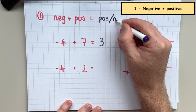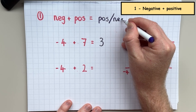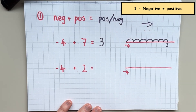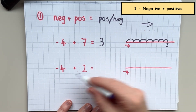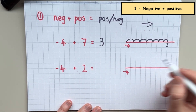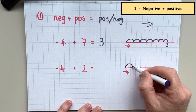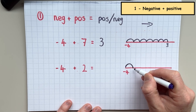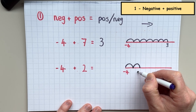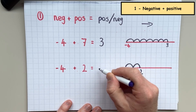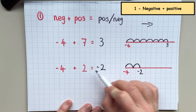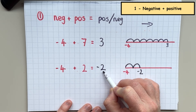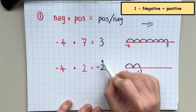But the next example is going to show us that sometimes you can get a negative answer. Here we have negative four again and we're only going to add two this time. So we're going to go to negative three and then to negative two, and that would be the answer. As you can see, this is a negative answer and the first one was a positive answer.